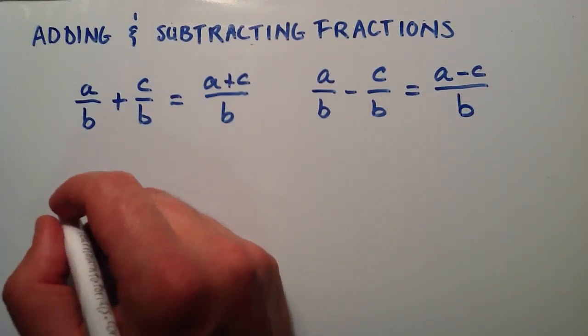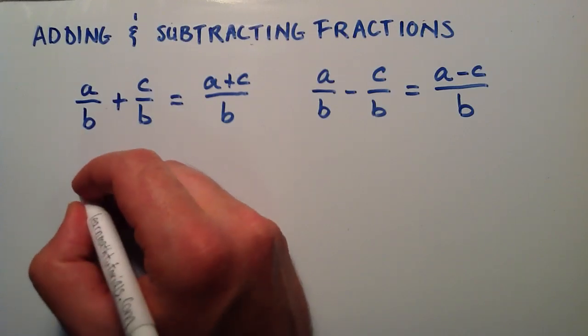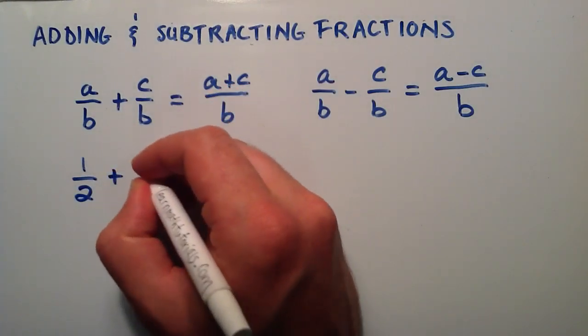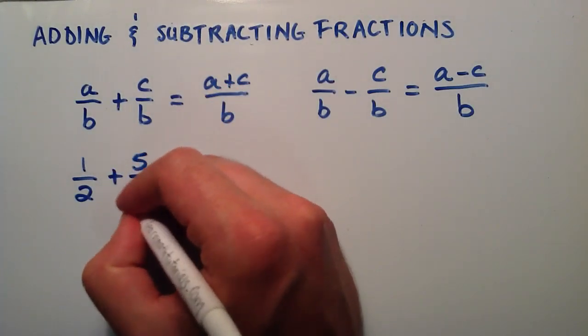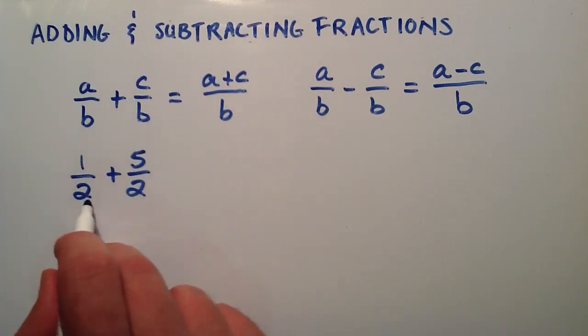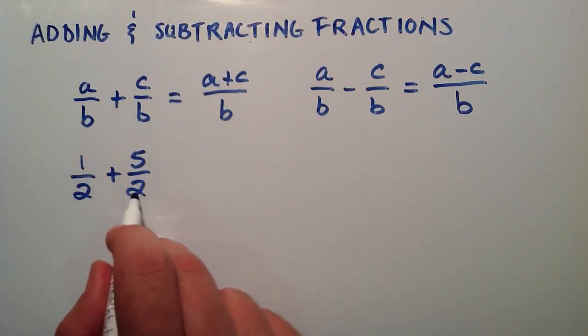Let's go ahead and do a couple quick examples here. Let's say that we have one half, and we're going to add that to five halves. Our b's are the same, we have the same common denominator, in this case our b is two.